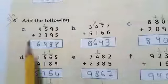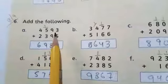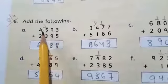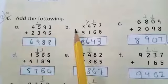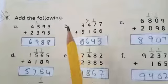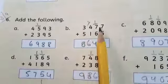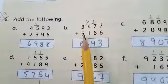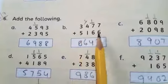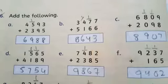Question number 6 is add the following. In this question we will convert 10s and 100s. So come to part B. In part B there is 3477 plus 5166. Now start adding them.